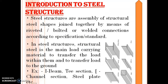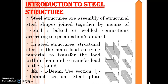Continuing with the Introduction to Steel Structure: steel structures are an assembly of structural steel shapes joined together by means of riveted, bolted, or welded connections, according to specification and standard. In steel structures, structural steel is the main load-carrying material to transfer the load within them and to transfer load to the ground. Examples of structural steel are I-beam or I-section, T-section, channels, steel plates, etc.